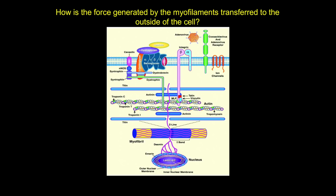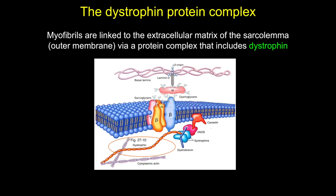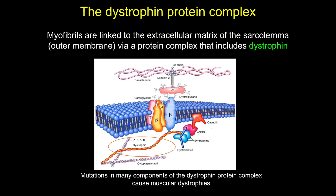The force generated by myofilaments must be transferred to the outside of the cell. The entire myofibril assembly connects to the sarcolemma, transmitting contractile force through attachment of actin filaments via Z-discs to a large protein complex. The key protein to remember is dystrophin, a very large bridge protein that links actin to the protein complex of the sarcolemma. Loss of dystrophin leads to Duchenne muscular dystrophy, a progressive muscle myopathy. Any defect impairing proteins in this complex can destabilize the sarcolemma architecture, and how impaired the muscles are depends on which protein is affected and whether it is defective, reduced, or missing entirely.